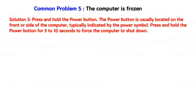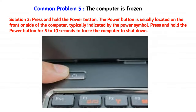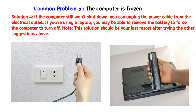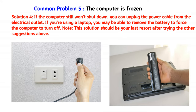Solution 3: Press and hold the Power button. The Power button is usually located on the front or side of the computer, typically indicated by the power symbol. Press and hold the Power button for 5 to 10 seconds to force the computer to shut down. Solution 4: If the computer still won't shut down, you can unplug the power cable from the electrical outlet. If you're using a laptop, you may be able to remove the battery to force it to turn off. Note: this solution should be your last resort after trying the other suggestions above.